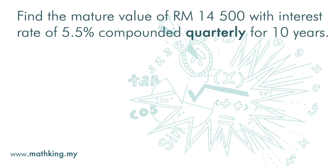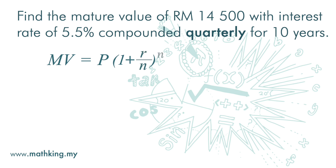Find the matured value of RM14,500 with an interest rate of 5.5%, compounded quarterly for 10 years. Compounding can be done daily, monthly, quarterly, or yearly. The matured value is principal times 1 plus interest rate to the power of time period.